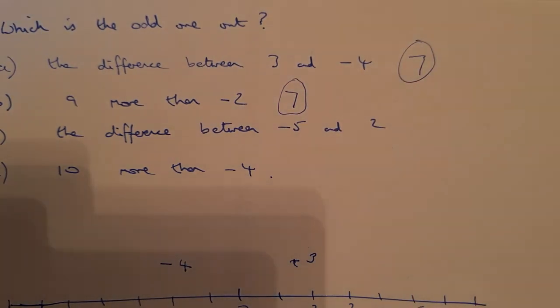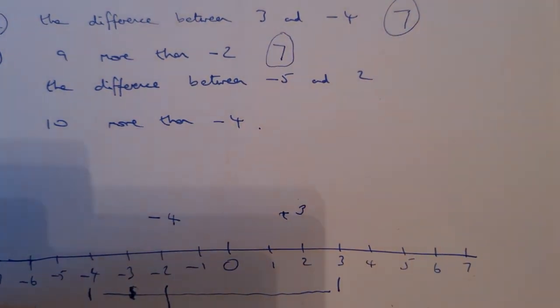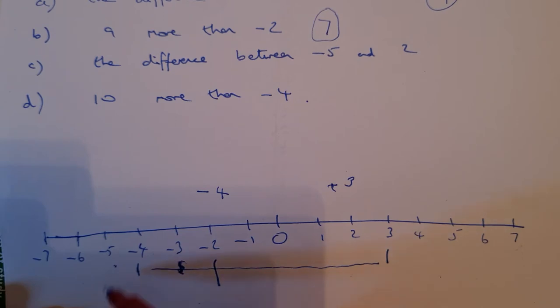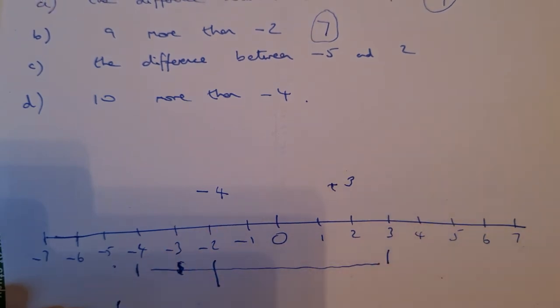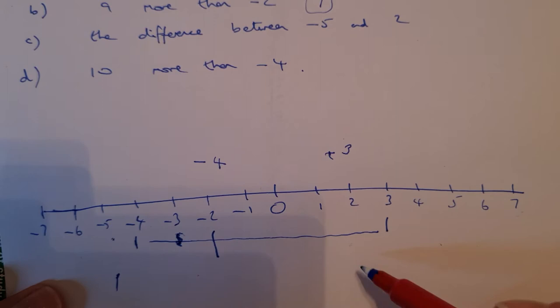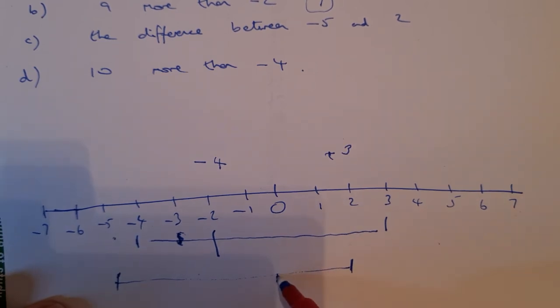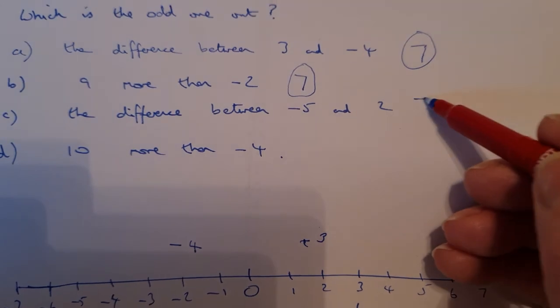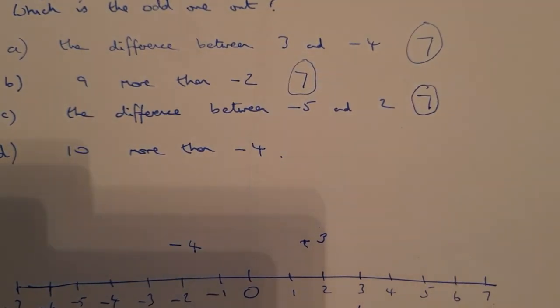OK, so I can see a pattern emerging now. The difference between minus 5 and 2. Well here's minus 5, just put a mark down below there. And 2 is over here. So what is the difference between minus 5 and 2? Well, I've got 2 above 0 and I've got 5 below 0. So that 5 and that 2, they make 7. So that one is 7 also.